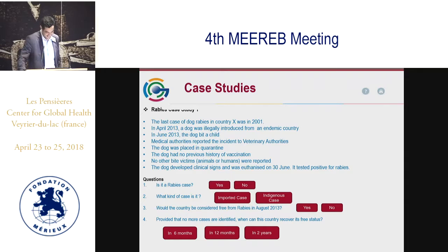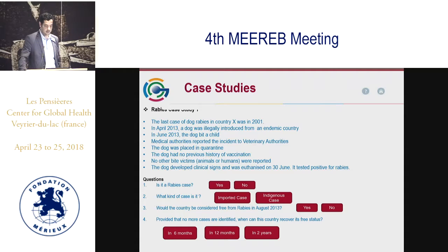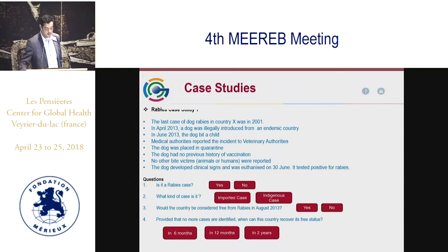This country could be any country. Unfortunately in June 2013, this illegally introduced dog bit a child. Medical authorities reported the incident to the veterinary authorities — good integrated case management — and the dog was placed in quarantine. The dog had no previous history of vaccination against rabies, and no other animal or human victims were reported. The health services acted quickly. Unfortunately the dog developed clinical signs and was euthanized on June 30, 2013. It was sent to the lab and tested positive for rabies.